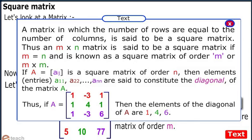Thus, if A is such a matrix, then the elements of the diagonal of A are 1, 4, and 6.